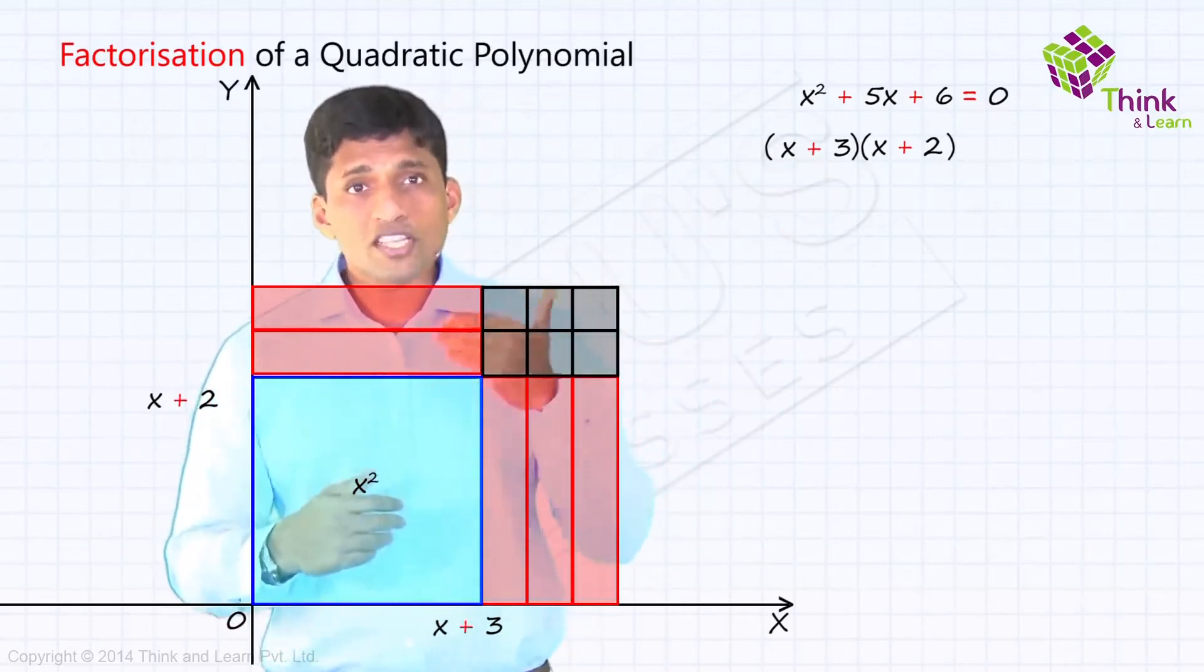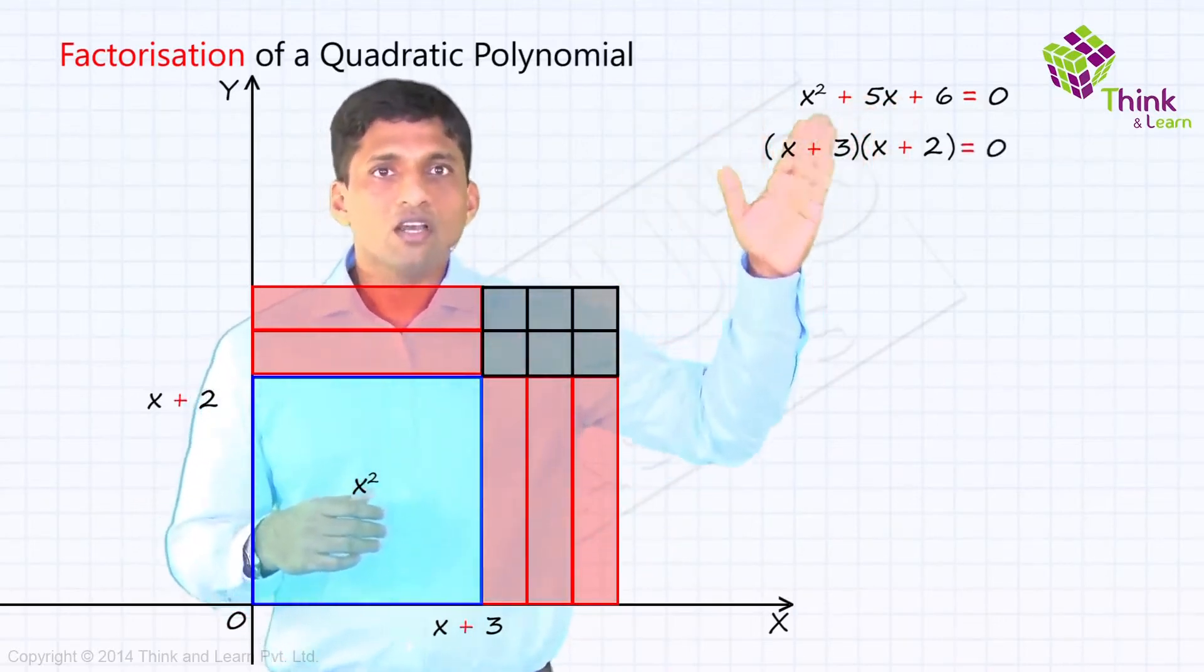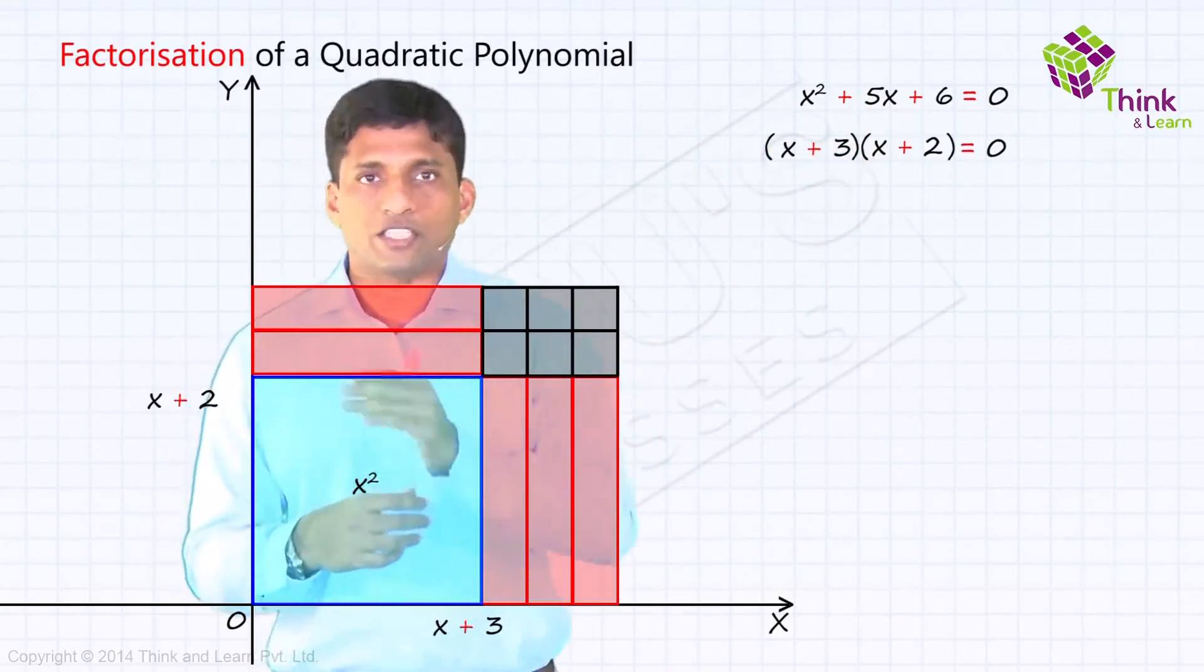Now, next, using the same thing, if I make it equal to 0, I will get a quadratic equation. So solution for that is very easy to visualize here. That's what I will do next.